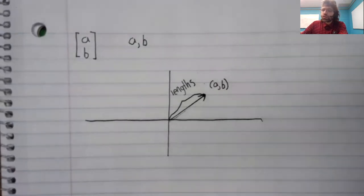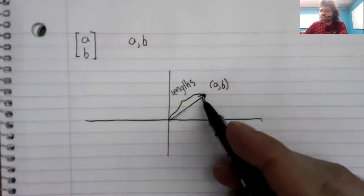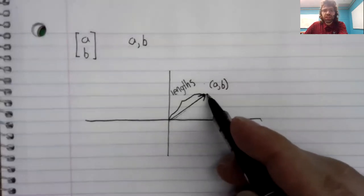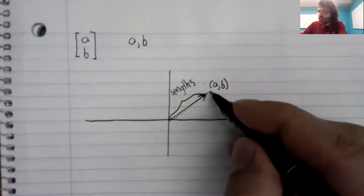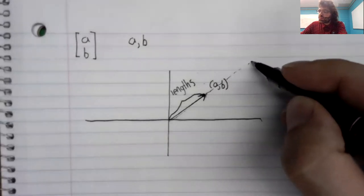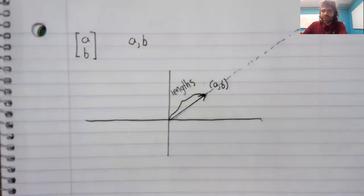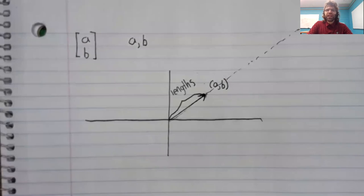Second, you should understand that vectors have directions. You see this arrow here, this vector is pointing in some direction. So vectors have lengths, and vectors have directions.